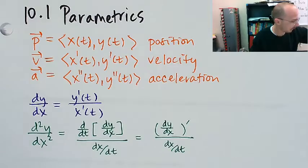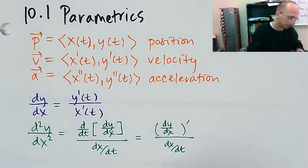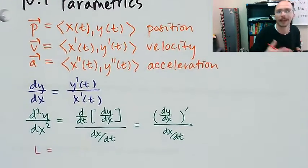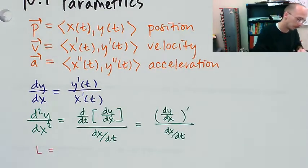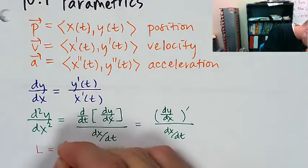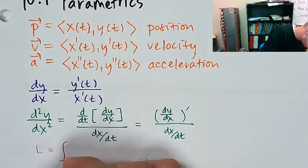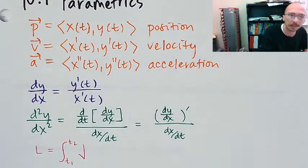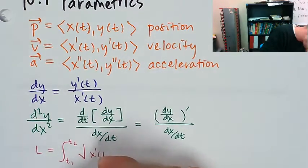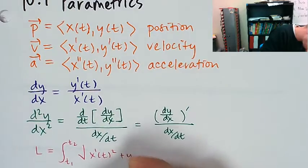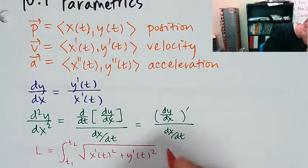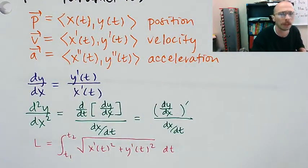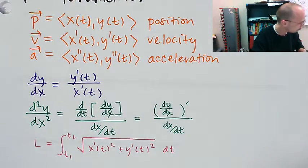And the arc length. So the length of a curve defined by x(t) and y(t), or x equals x(t) and y equals y(t), between two time values is a new arc length formula. That's going to be the integral from t1 to t2 of the square root. That's still the same, but what goes inside the square root has changed. This is going to be x'(t) squared plus y'(t) squared inside the square root. And we're integrating with respect to time now instead of with respect to x. And that was 10.1.